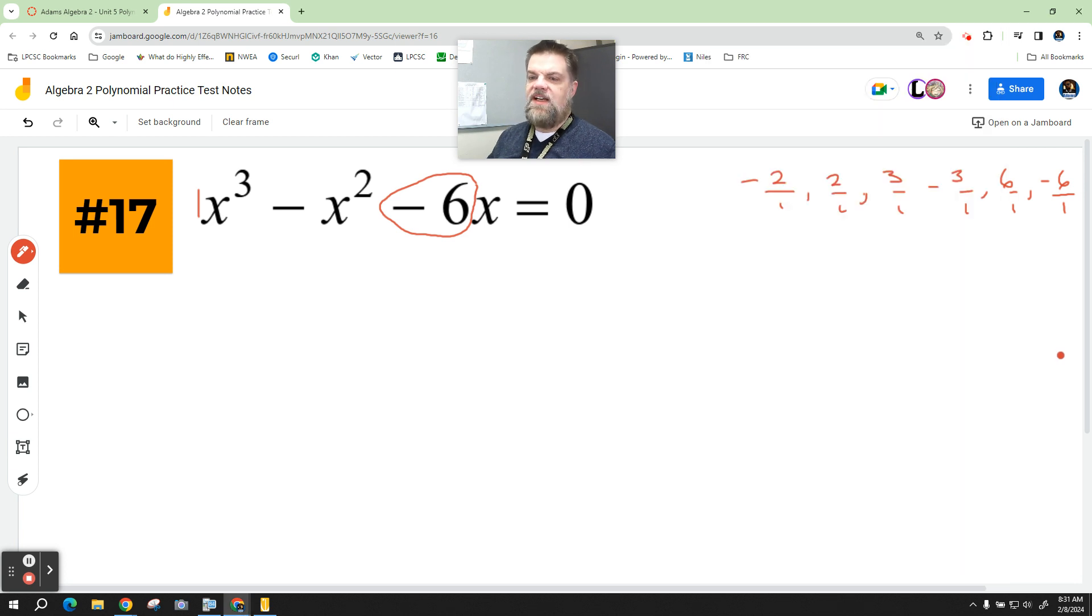So I already know the answers, right? It's negative 2, but you can't just write this down. You can't say x equals negative 2, x equals 0, and x equals 3 and expect to get full credit. It's not happening. You've got to do some work.